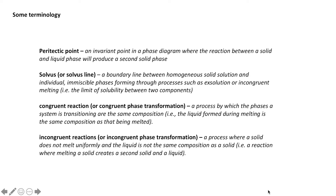We have two different types of reactions. A congruent reaction, or congruent phase transformation, is a process by which phases transitioning in a system are the same composition — for example, a solid being melted where the melt is the same composition as the solid. An incongruent reaction, or incongruent phase transformation, is a process where a solid does not melt uniformly and the liquid is not the same composition as that which is being melted — for example, where melting a solid creates a second solid and a liquid, like our peritectic point in this presentation.